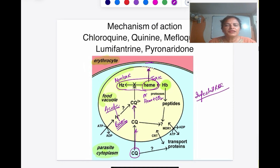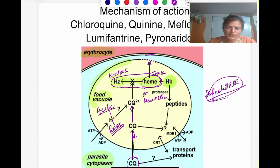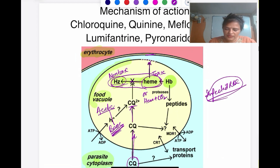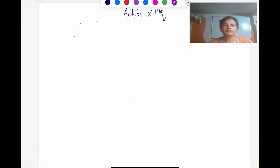This is how chloroquine, quinine, mefloquine, lumefantrine, and pyronaridine act. To repeat: chloroquine is a basic molecule, rapidly taken up by infected RBCs, increases the pH of the food vacuole, inhibits conversion of toxic heme to non-toxic hemozoin, and toxic heme plus its combination with chloroquine lyses the food vacuole membrane and plasmodial membrane, killing the plasmodium.